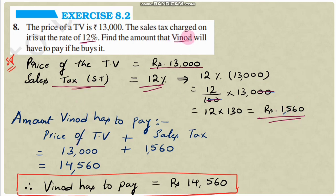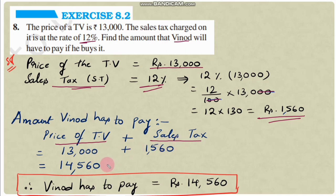Total amount Vinod has to pay = 13,000 + 1,560 = 14,560 rupees.